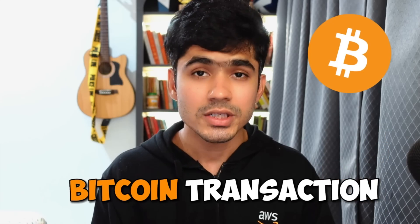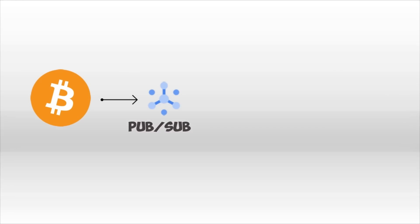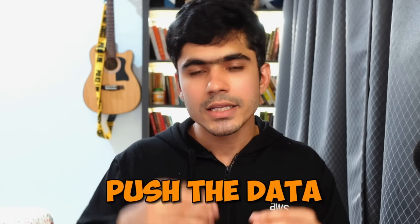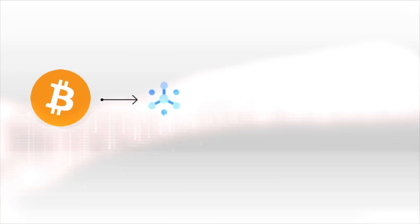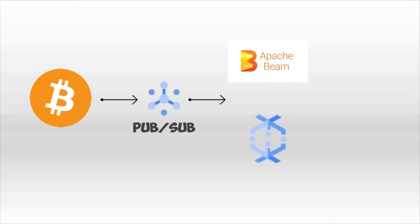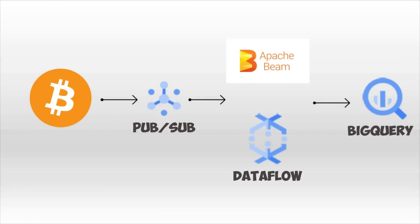In the first real-time project, a client had data coming from Bitcoin transactions and wanted to build a data warehouse on Google BigQuery. Here's the architecture: data was pushed into a Pub/Sub topic — an asynchronous messaging service with producers and consumers. The client pushed data to the Pub/Sub topic, then to process and transform it in real-time we used Apache Beam, writing code in Python to process the data and load it onto BigQuery.